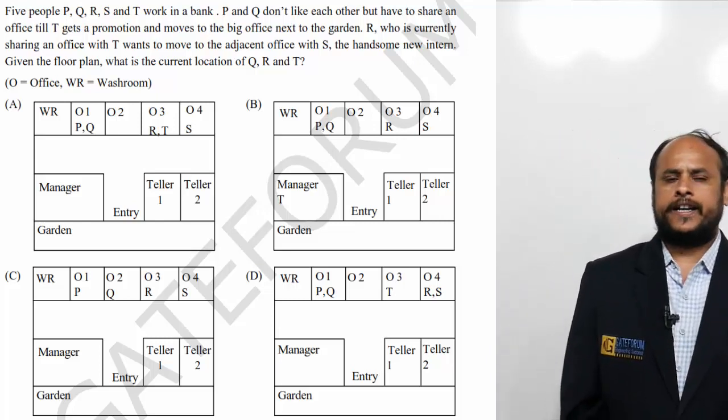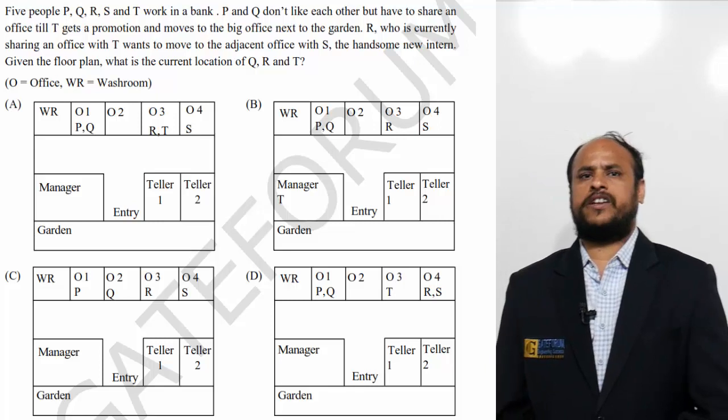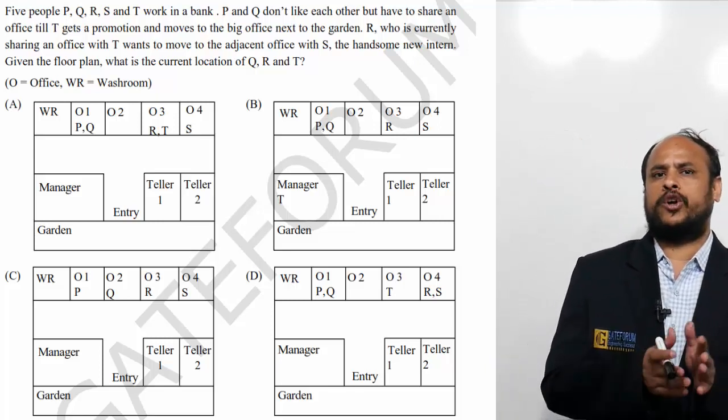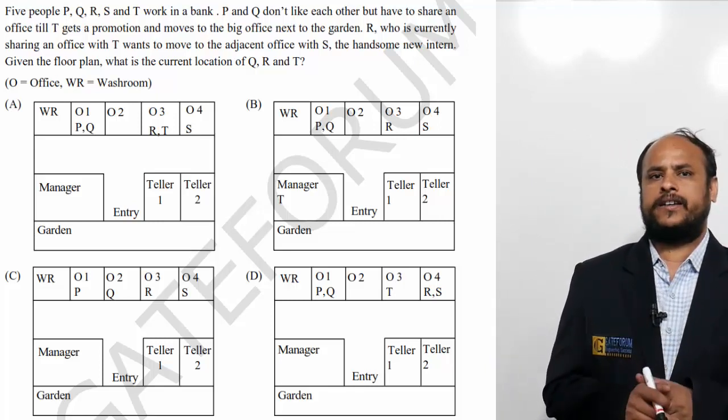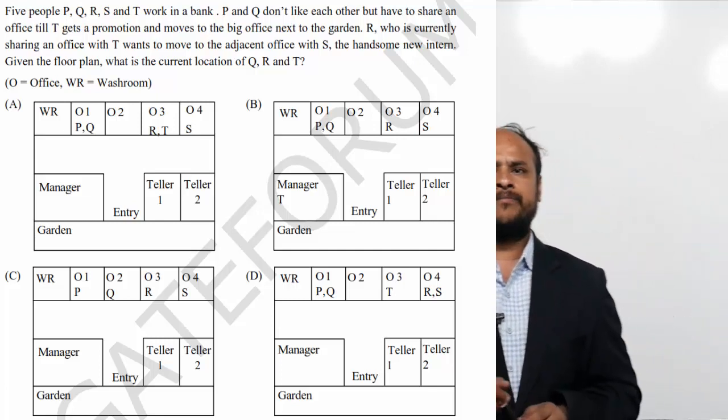Observe that. According to the options, we can simplify this problem. What is given here? The question is asking about the current location of Q, R and T. According to the current location, it is clearly mentioned in the problem that R is currently sharing an office with T.